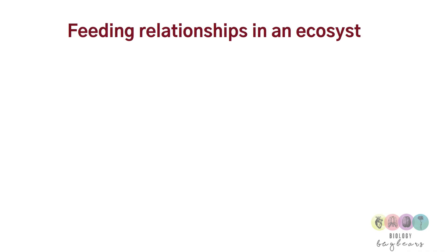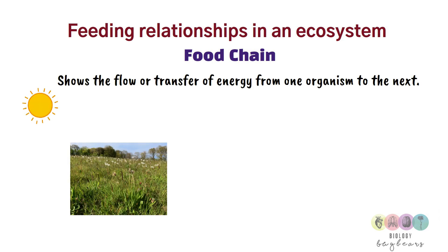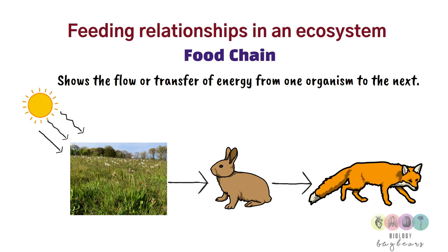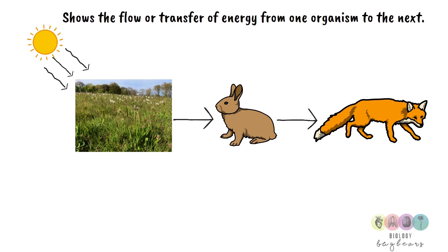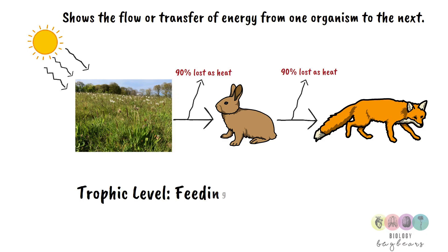Feeding relationships in an ecosystem are represented by food chains, which show the flow or transfer of energy from one organism to the next. All energy on the planet comes from the sun. In photosynthesis, some of that energy is trapped and converted by the plant into chemical energy, and the plant is then eaten by an animal, passing some energy along — however, most is lost as heat.